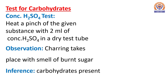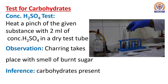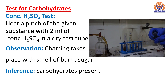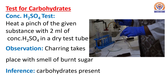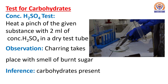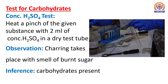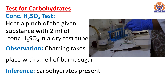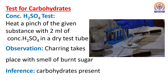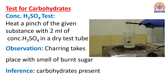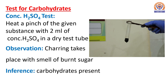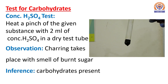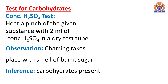For the concentrated H2SO4 test, we heat a pinch of the given substance with 2 ml of concentrated H2SO4 in a dry test tube. The observation is that charring takes place with the smell of burnt sugar. If charring occurs, this indicates that a carbohydrate is present.